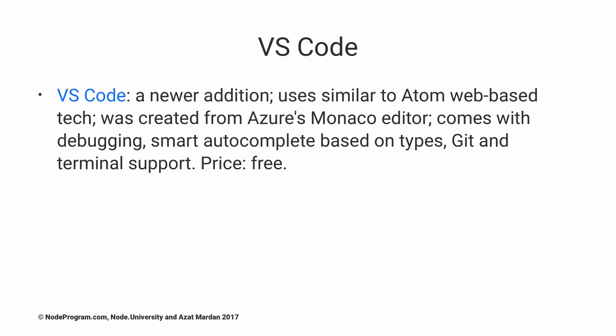VS Code is another editor which is very similar to Atom, and VS Code is my favorite editor right now. I switched from Atom to VS Code. It started as Microsoft Azure's Monaco editor, which they use in the Azure cloud so you can edit your code in the browser. And basically it also uses HTML, CSS and JavaScript and it also uses Electron.